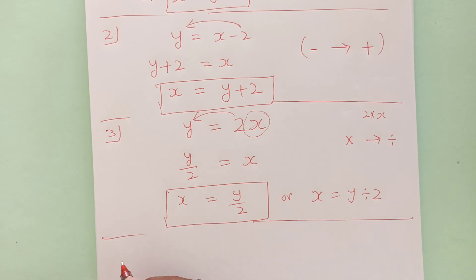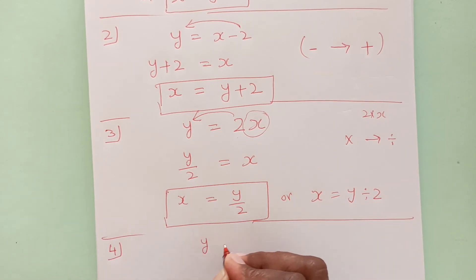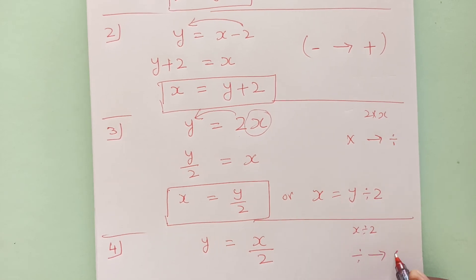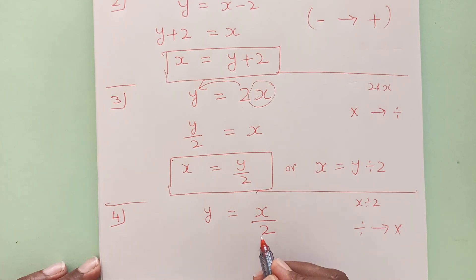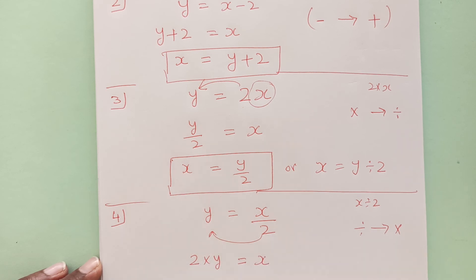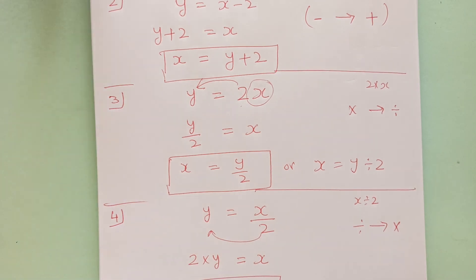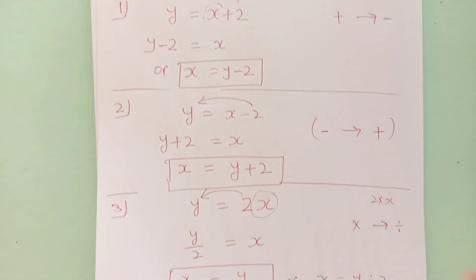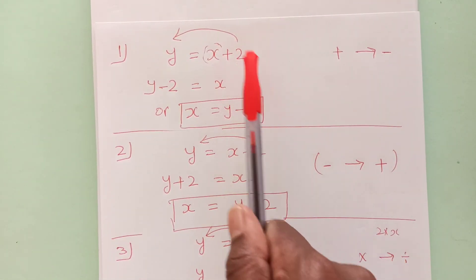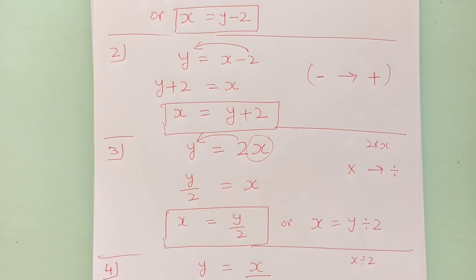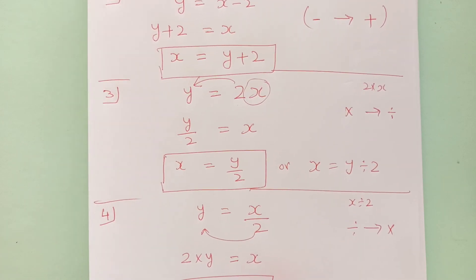Another example with the division sign: y equals to x over 2. Here x is divided by 2, so division will now change to multiplication. We shift 2 to the other side, and it becomes 2 times y equals to x, meaning x equals to 2y. I have given you four examples here with different operation signs — positive became negative and negative became positive, multiplication became division, and division became multiplication.